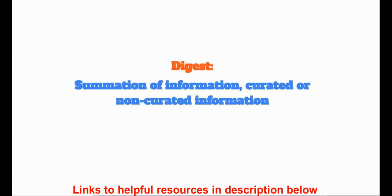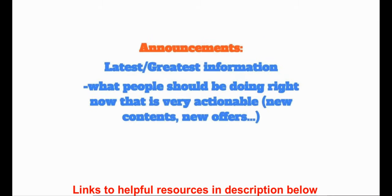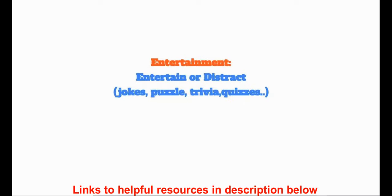The last type of value is the email digest — a summation of information. This is common with Quora, which sends you information on topics, questions, and discussions that people are having, curated into topics. It's like a summary of information for people to look at, digest, read, and consume. So these are the four types of values: announcements, support and services, entertainment, latest news, and digest.